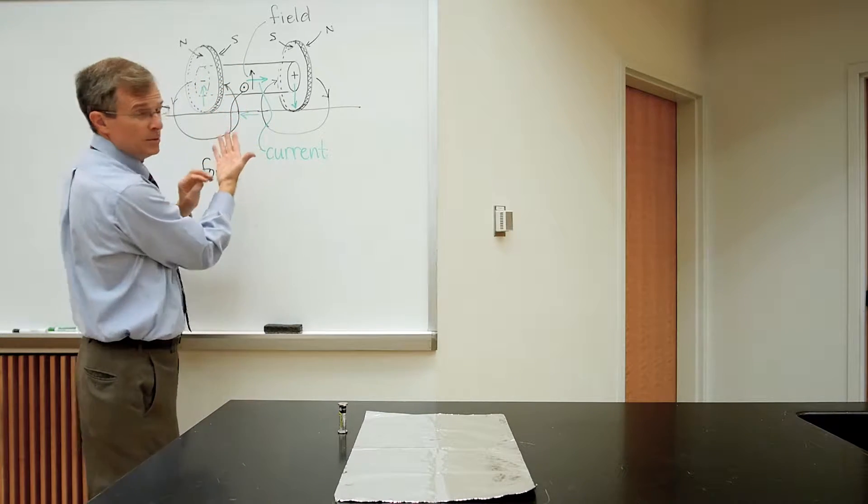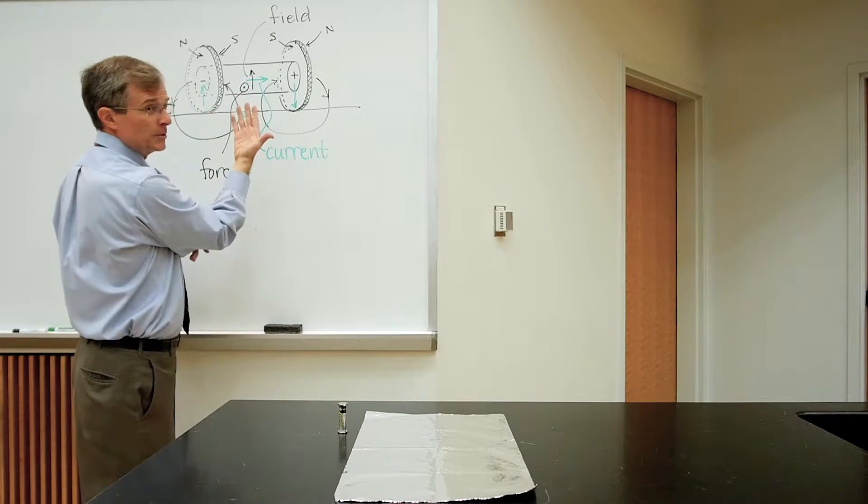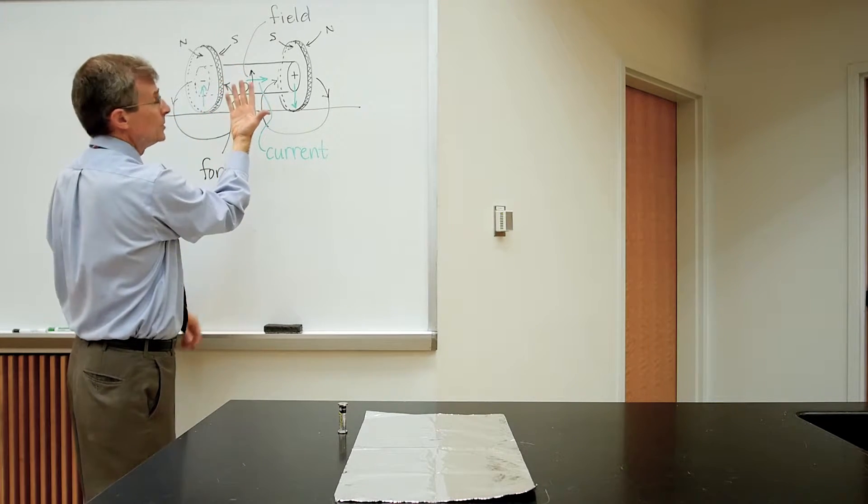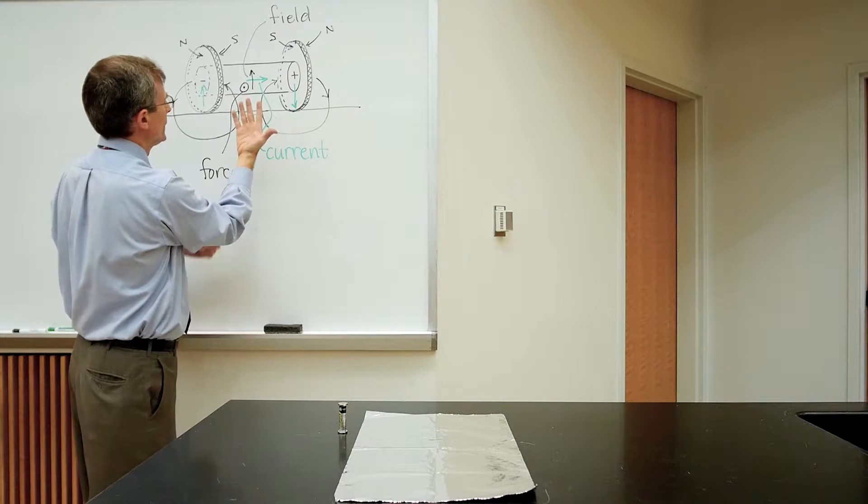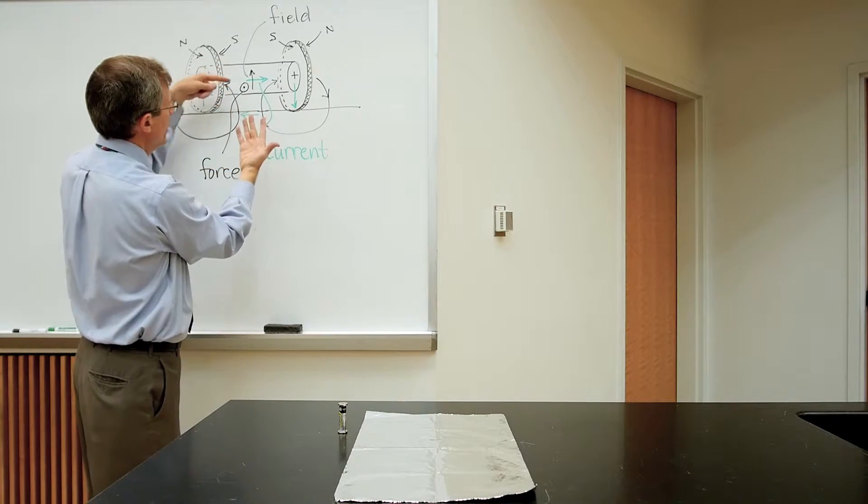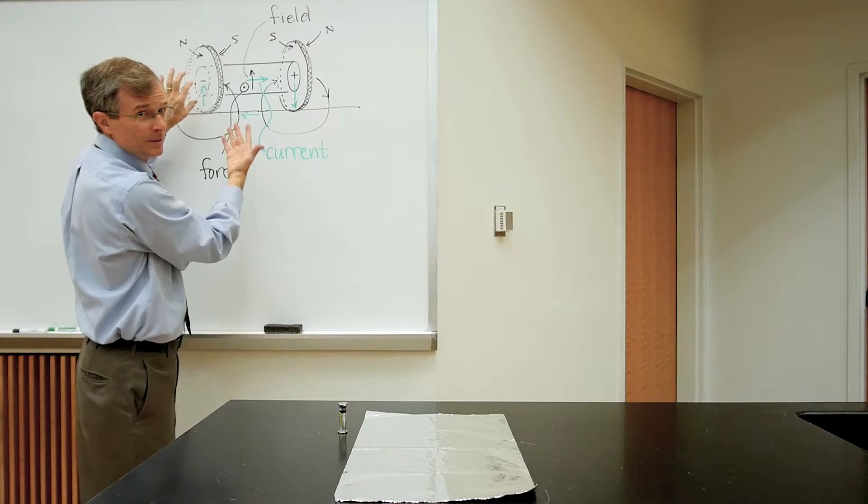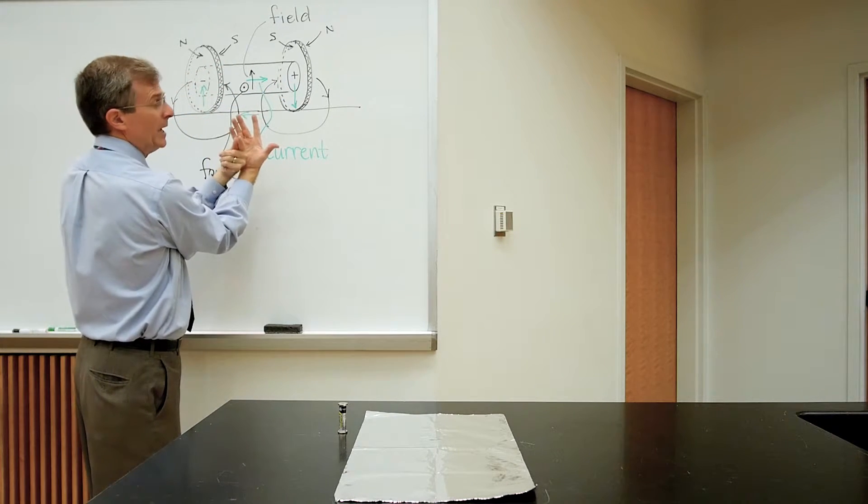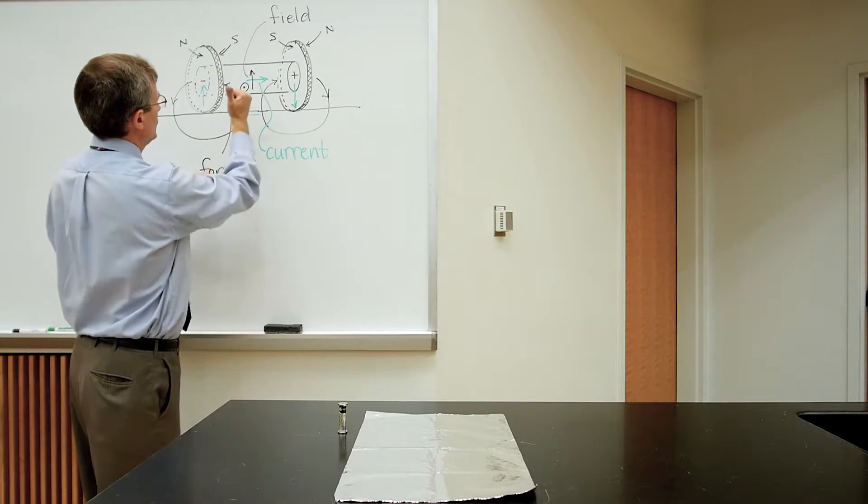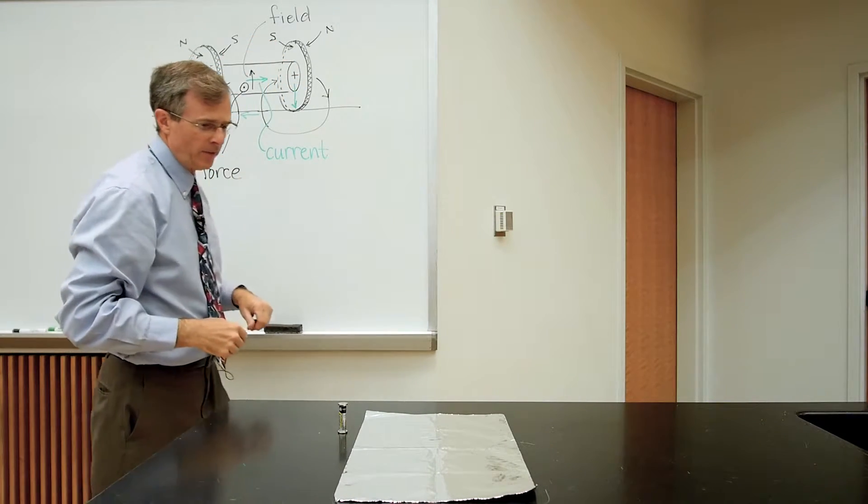If we place, using the right-hand rule, if we place our thumb in the direction of the current, our fingers in the direction of the field, then the force on that battery, due to the magnetic fields of these magnets, has to be out of the palm. In other words, this way, out of the plane of this diagram.